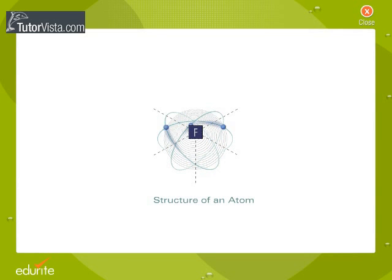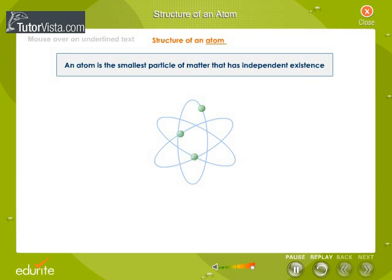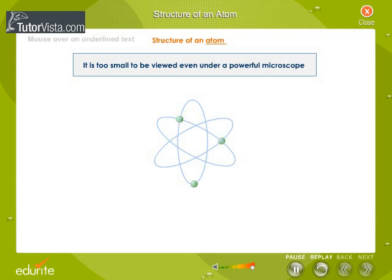Structure of an Atom. An atom is the smallest particle of matter that has independent existence. It is too small to be viewed even under a powerful microscope.